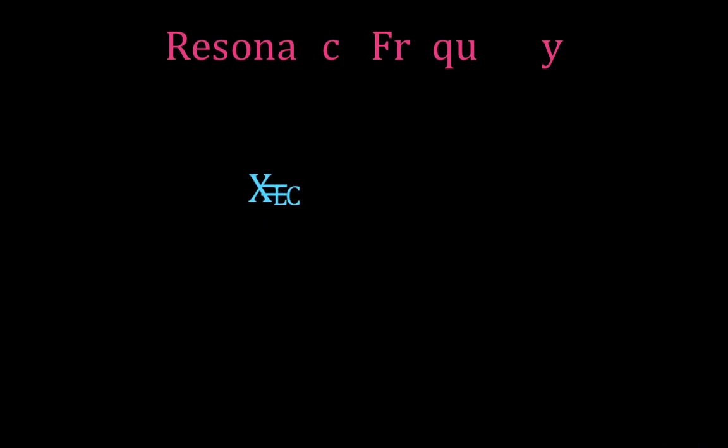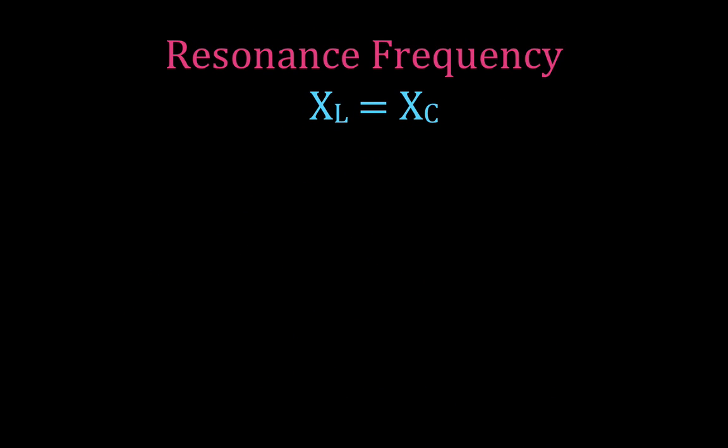All right, now let's go and see how we calculate the resonance frequency. We're going to set the inductive reactance and the capacitive reactance equal to each other. Inductive reactance is equal to 2πfL. Capacitive reactance is 1 over 2πfC. These two frequencies are obviously the same frequency. So first thing we're going to do to solve for that frequency is multiply both sides of the equation by f.